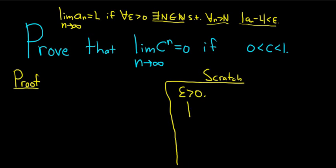So in this problem a sub n is our c to the n, our limit is l which is 0, and we want this to be less than epsilon. So then taking the absolute value we get, subtracting rather, the absolute value. c is positive so we can drop the absolute value, so we get c to the n less than epsilon.